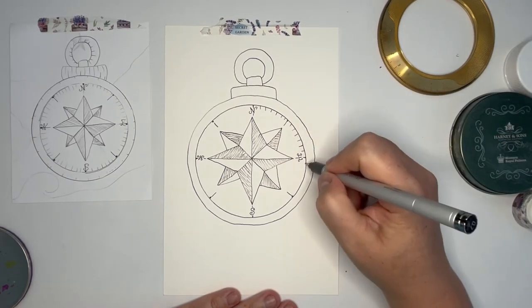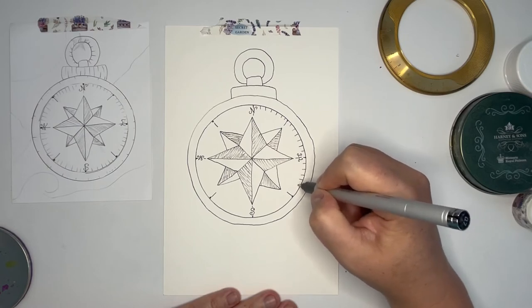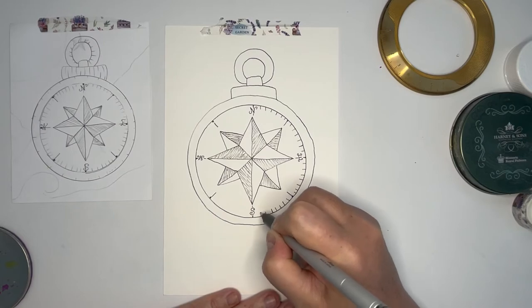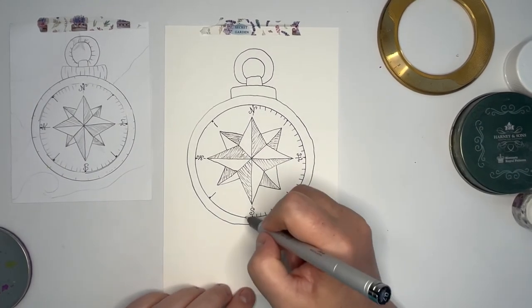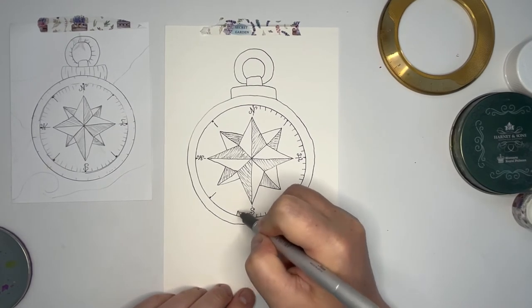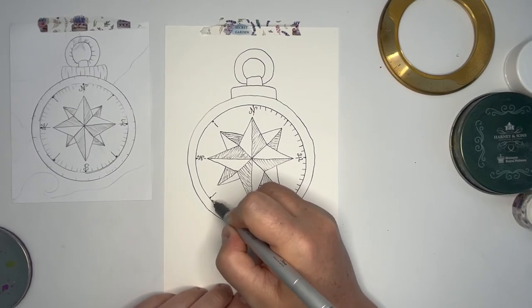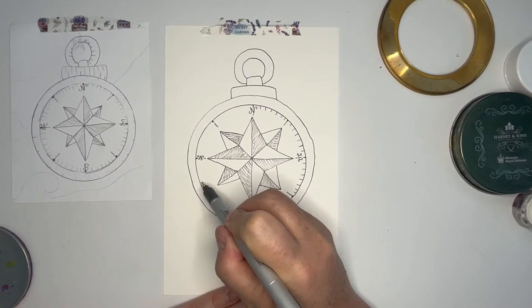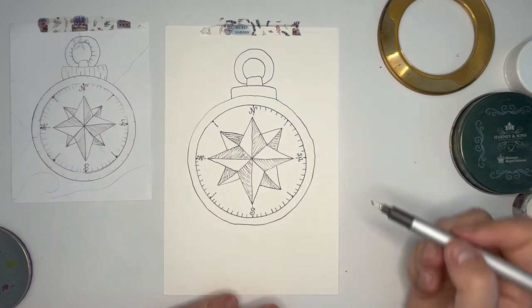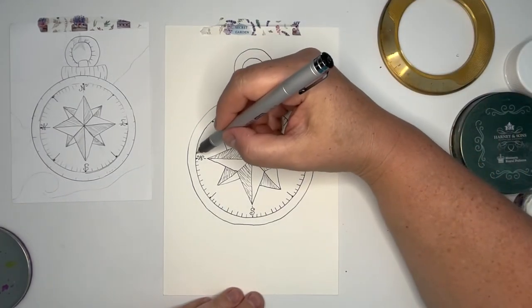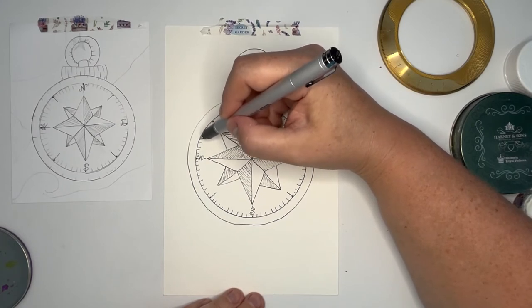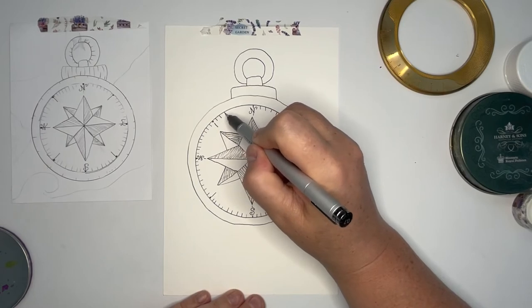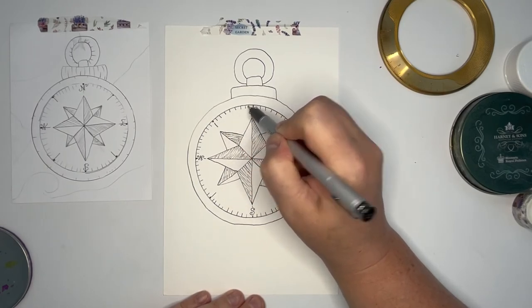This is where your creativity really can come through. If you want to do something different, you can. I just added some lines there and then you can put some little tick marks in between if you want to, and they can be dashes, they can be dots, whatever you want to do. And depending on what direction you want your compass to be pointing, you can always add the main hand of the compass. You can make it in any shape that you want, it can be like a heart, it could be an arrow, really anything goes.